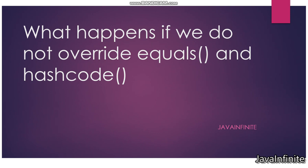In this video we are going to cover three scenarios. Scenario 1: what will happen if we do not override equals and hashCode? Scenario 2: what will happen if you override only equals and not hashCode? And Scenario 3: what will happen if you override only hashCode and not equals? We are going to discuss each scenario in detail with an example.